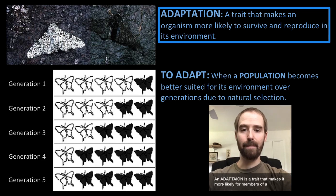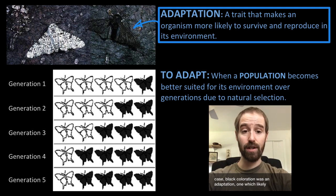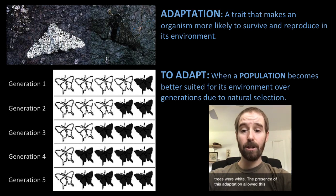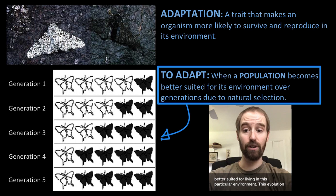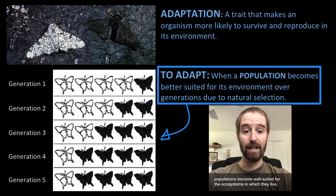An adaptation is a trait that makes it more likely for members of a population to survive and reproduce — a trait that increases fitness. In this case, black coloration was an adaptation, one which likely appeared due to a random genetic mutation, just a lucky accident. Not that this mutation was very beneficial back when the trees were white. The presence of this adaptation allowed this population of moths to adapt to its changing environment over multiple generations, meaning that over time this population evolved to become better suited for living in this particular environment. This evolution was driven by natural selection — this process is how all populations become well suited for the ecosystems in which they live, and that's what we mean when we say that a population has adapted to its environment.